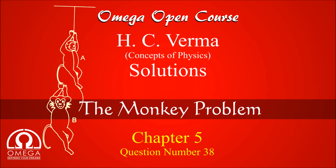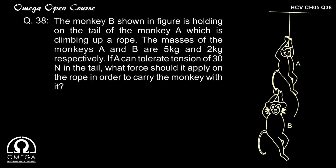Monkey B, shown in the figure, is holding on to the tail of monkey A which is climbing up a rope. The masses of monkeys A and B are 5 kg and 2 kg respectively. If A can tolerate a tension of 30 N in the tail, what force should it apply on the rope to carry monkey B with it?